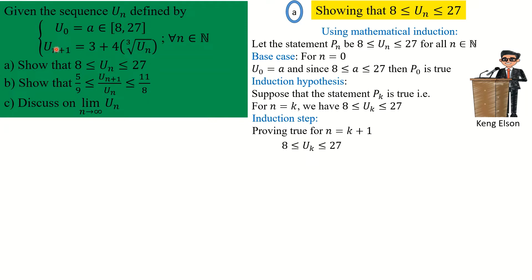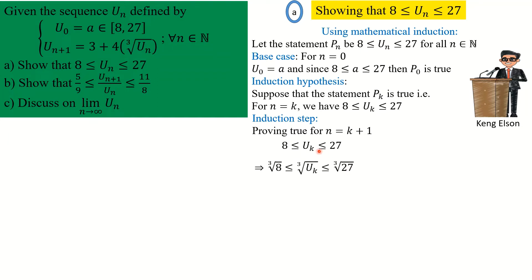We get the expression for u_{k+1} by replacing n with k in the recurrence: u_{k+1} = 3 + 4·∛(u_k). Now, starting from 8 < u_k < 27, we take the cube root on all sides to get 2 < ∛(u_k) < 3. Next, we multiply all three parts by 4 — since 4 is positive, the inequality signs remain intact — giving 8 < 4·∛(u_k) < 12.